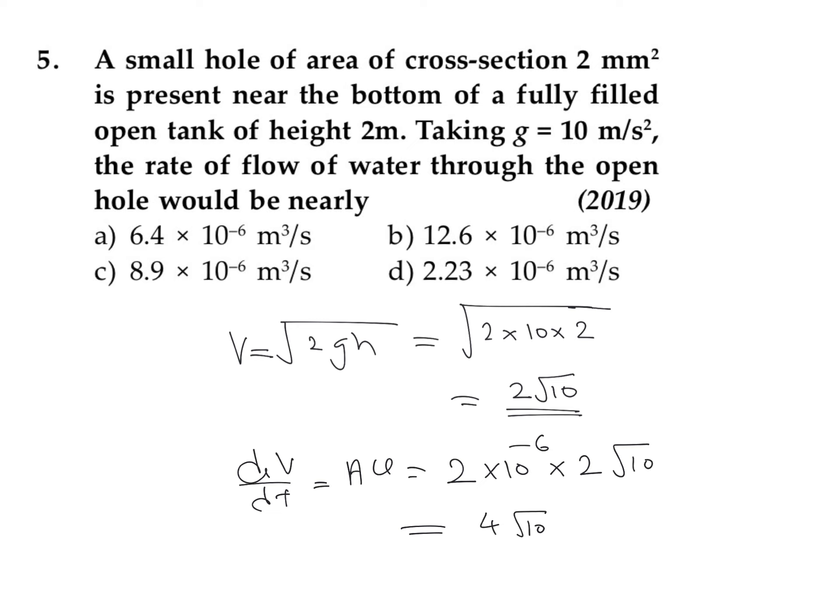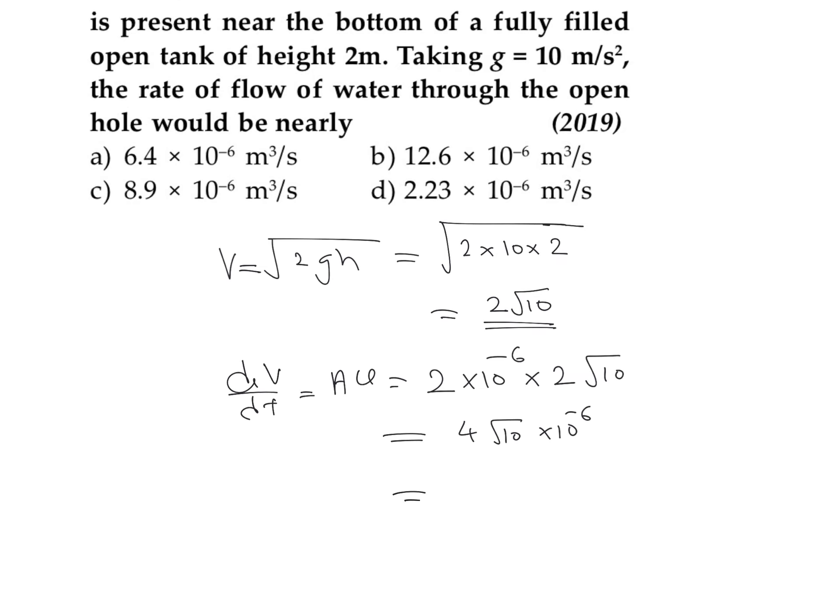So this becomes 4√10 × 10^-6, which is approximately 12.6 × 10^-6 m³/s.